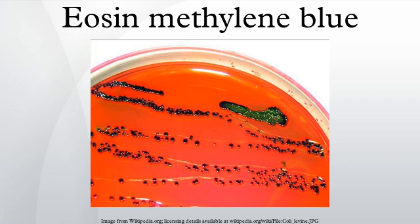Rapid lactose fermentation produces acids, which lower the pH. This encourages dye absorption by the colonies, which are now colored purple-black.